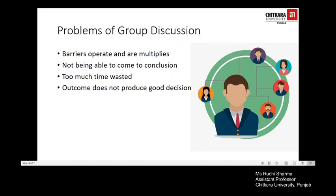The problems of group discussion include that when more than two people are involved, certain communication barriers may operate, specifically when the number of people increases. Participants as well as leaders need to have meeting skills, otherwise the meeting can be very frustrating and end up as a waste of time. One of the worst problems is not being able to come to a conclusion within a reasonable time. To overcome these problems, the leader must have the required skill to conduct the meeting, and other members must also have commitment and skill to take part.